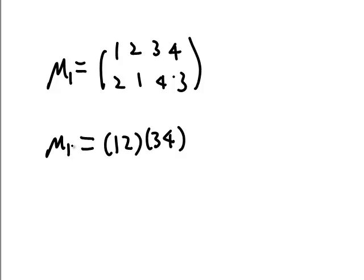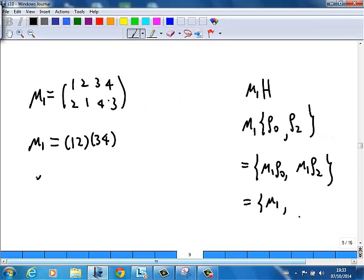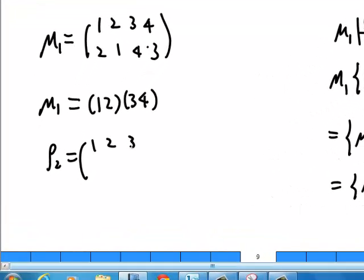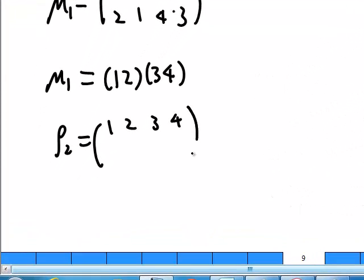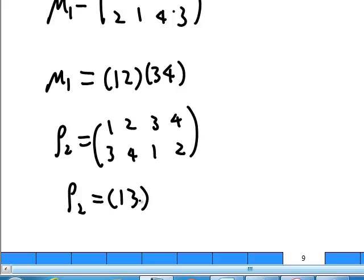Then I look at rho2. rho2 is 1, 2, 3, 4 in the first row, and 3, 4, 1, 2 in the second row. So in cycle notation: 1 goes to 3, 3 goes to 1, 2 goes to 4, 4 goes to 2. So rho2 is (1 3)(2 4).